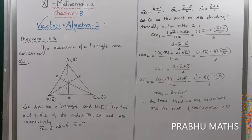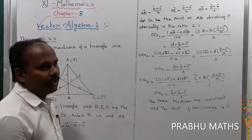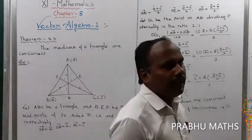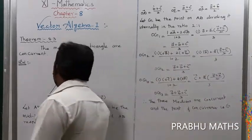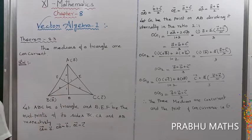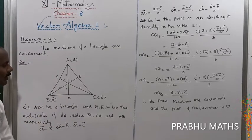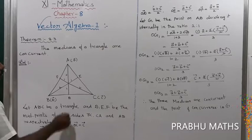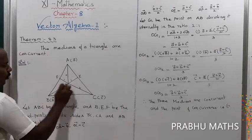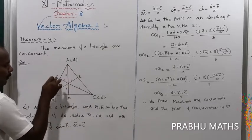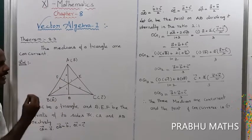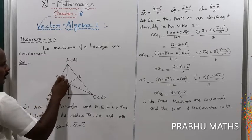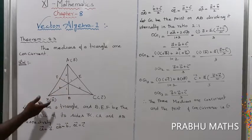Theorem 8.3: The medians of a triangle are concurrent. For any triangle there are 3 medians, and they all meet at one point. The internal ratio at which the medians meet is called the section, and that ratio is 2:1.